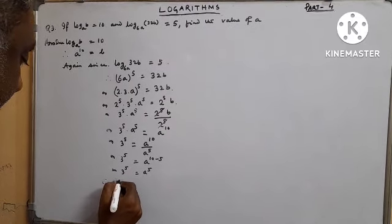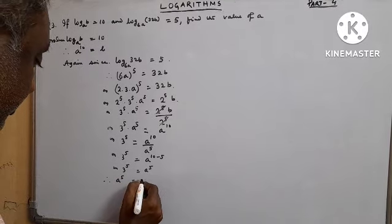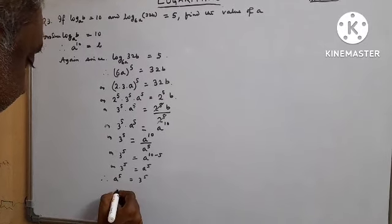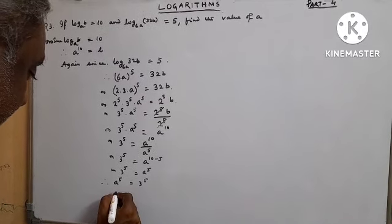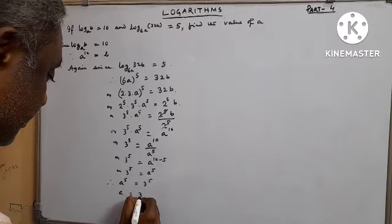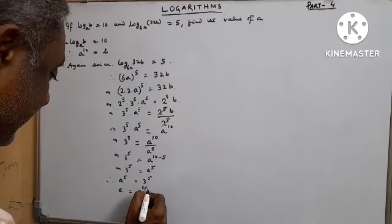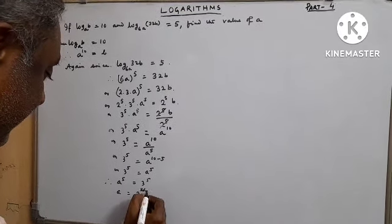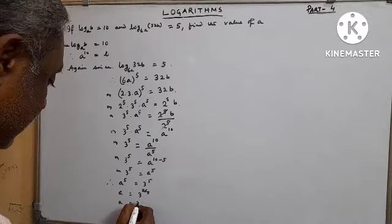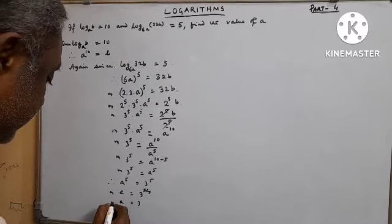Therefore a^5 = 3^5, which means a equals 3. That is the final answer. Thank you.